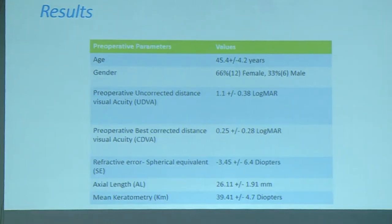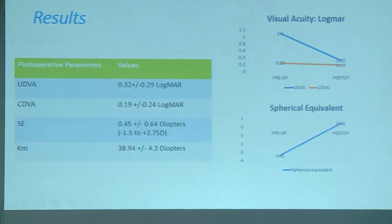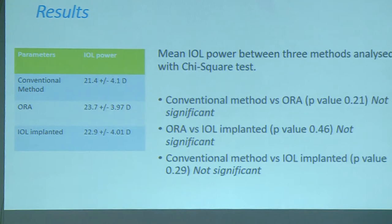The mean age was 45.4 years, 66% female. Preoperative UCDVA was 1.1 logMAR, CDVA 0.25 logMAR, spherical equivalent minus 4.25, axial length 26.11, and mean keratometry 39.41. UCDVA improved from 1.1 to 0.32 logMAR postoperatively and CDVA improved from 0.25 to 0.19 logMAR. Spherical equivalent reduced from 3.45 to 0.45. The IOL power calculated by conventional method gave a mean of 21.4 diopters, ORA gave 23.7 diopters, and the IOL implanted was 23.9 diopters; chi-square test found no significant difference.